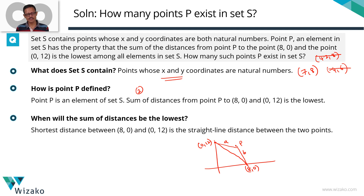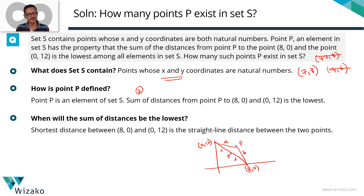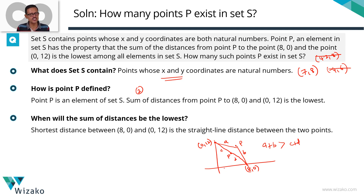Now consider a scenario where P lies on the line segment joining (0, 12) and (8, 0). The distances are C and D, and C plus D equals the straight-line distance. If point P does not lie on this line segment, then by the triangle inequality — the sum of any two sides is greater than the third side — A plus B will be greater than C plus D. So the sum of distances is minimized only when point P lies on the line segment joining (8, 0) and (0, 12).